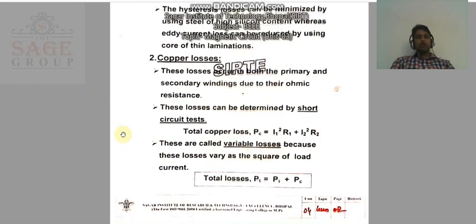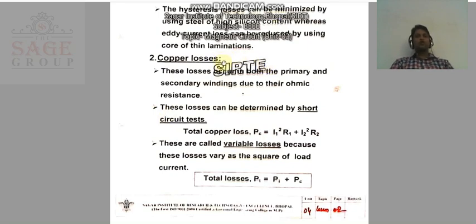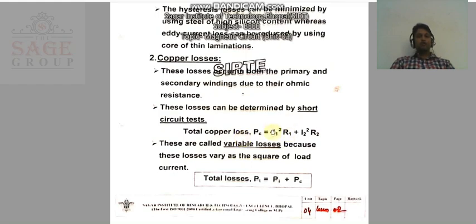The second type of loss is copper loss. This loss is caused due to the resistance property of the conducting material. These losses occur in both the primary and secondary windings due to their ohmic resistance. These losses can be determined by the short circuit test. The total copper loss of a transformer equals copper loss due to the primary winding plus copper loss due to the secondary winding.